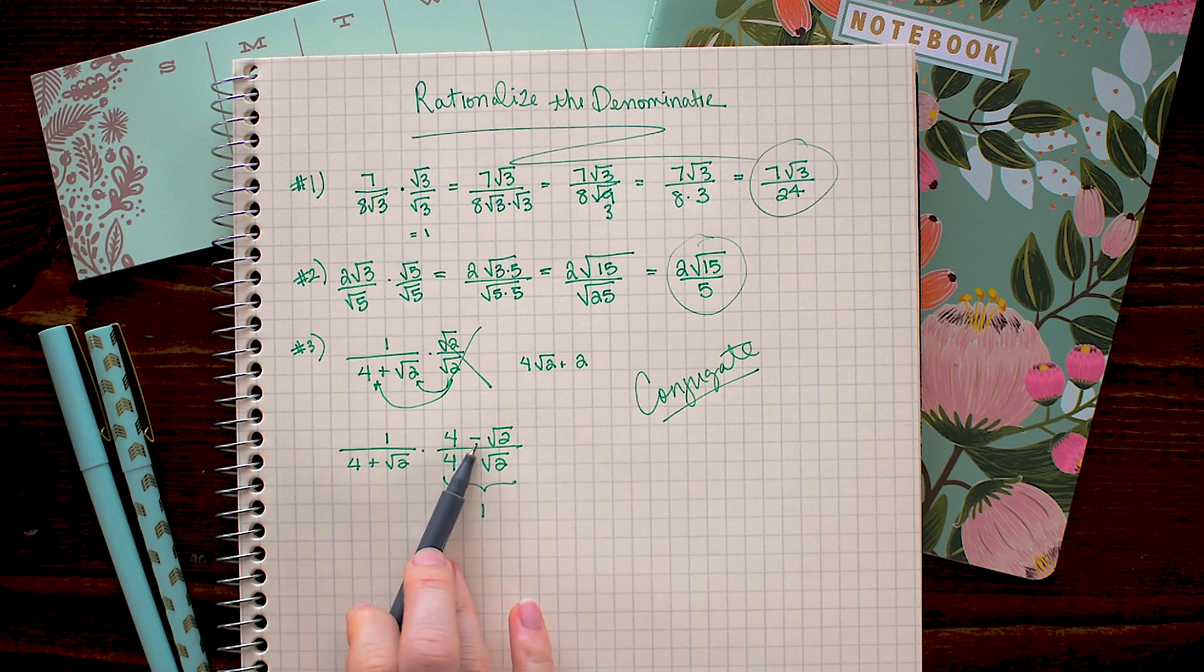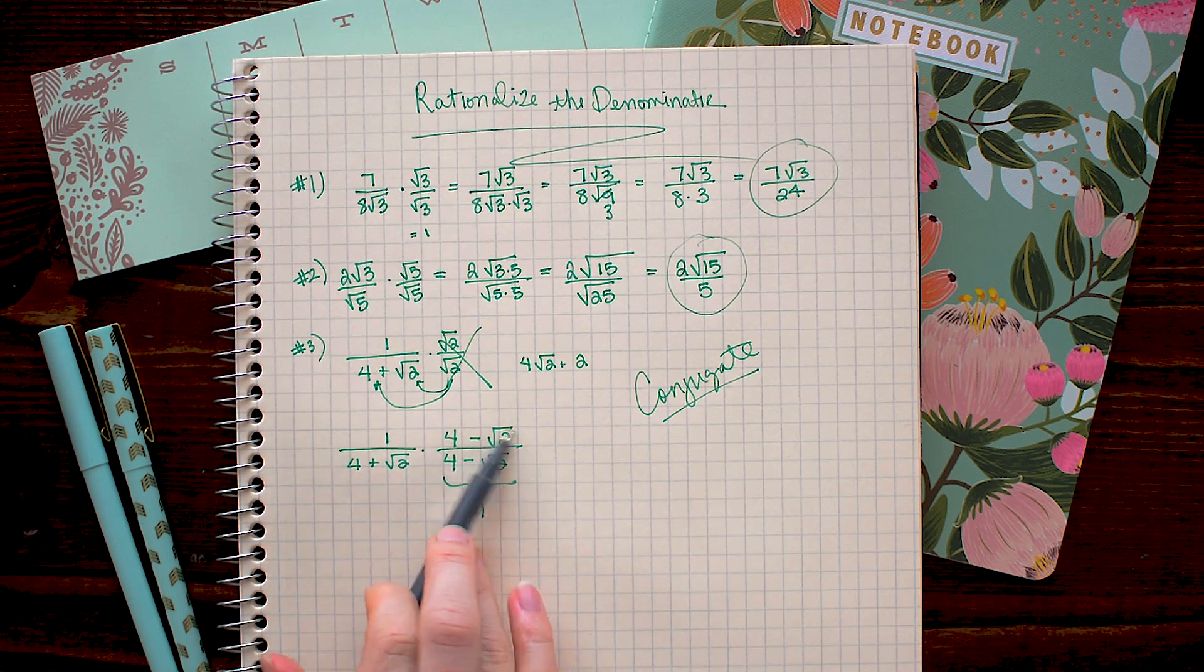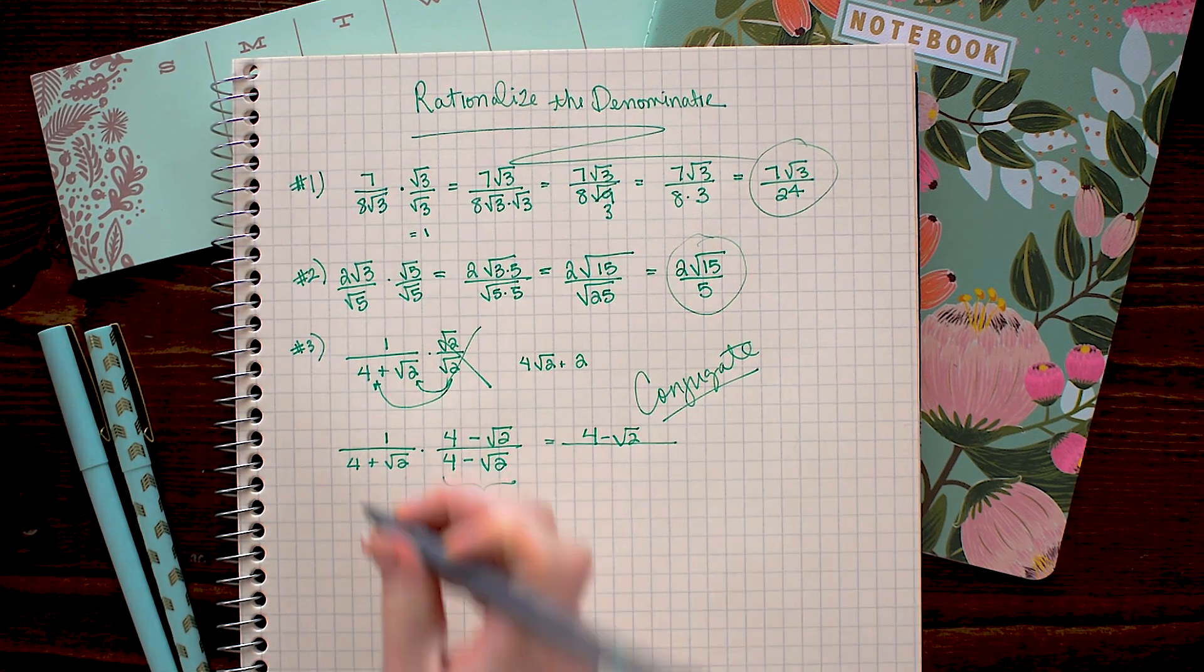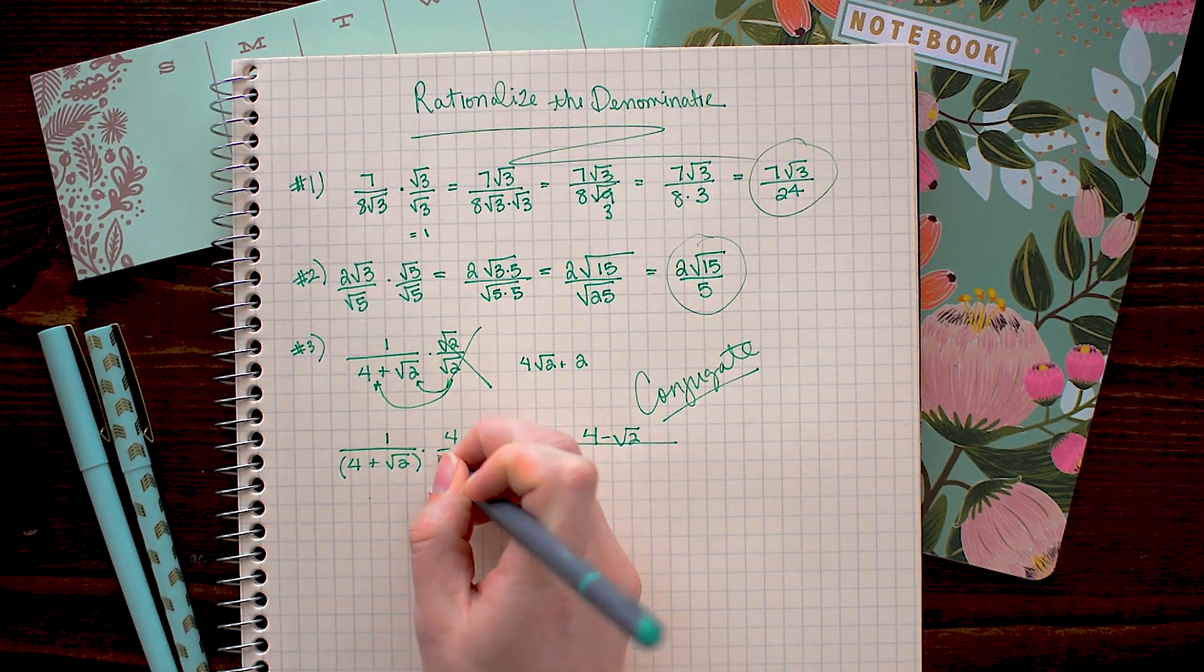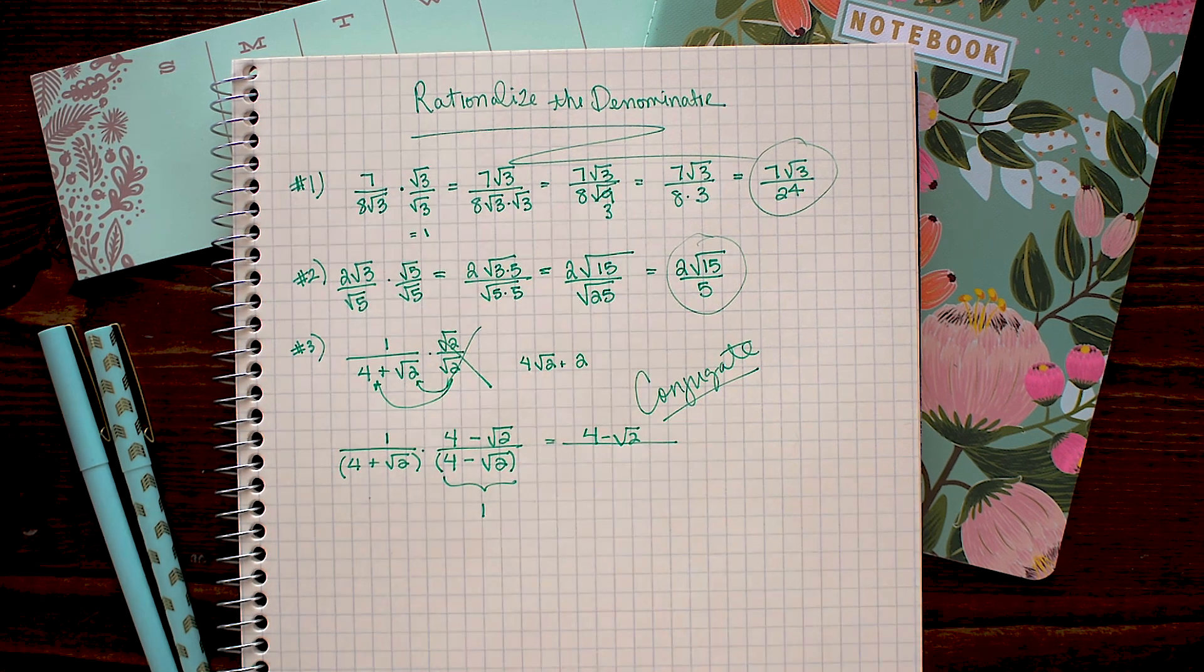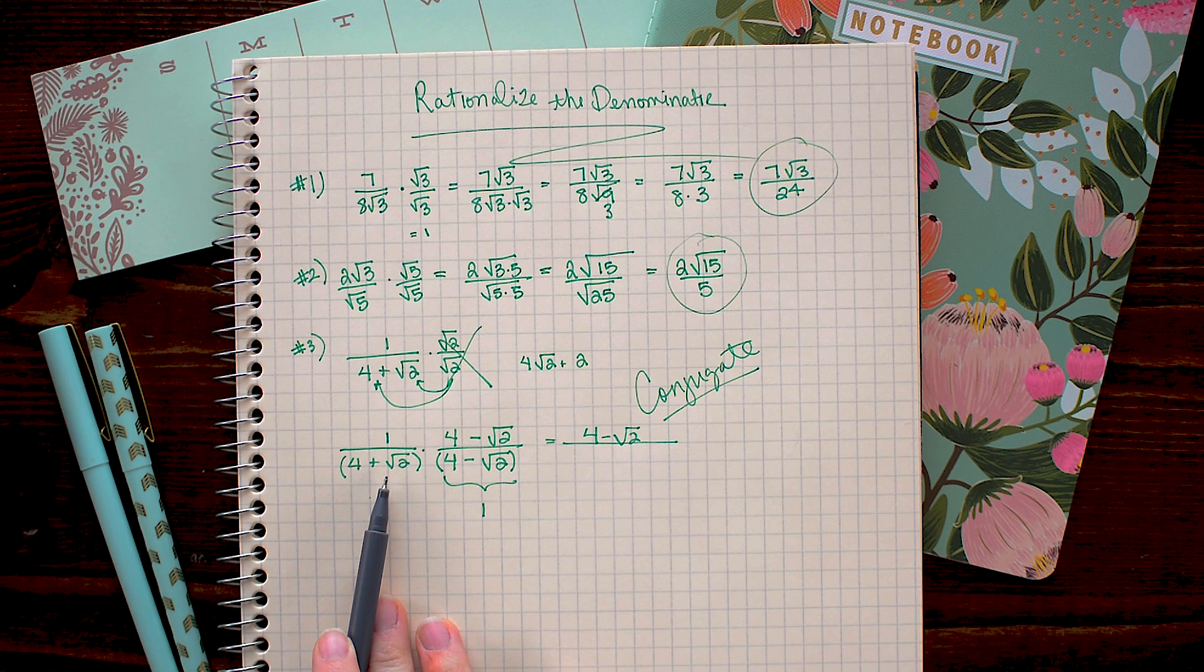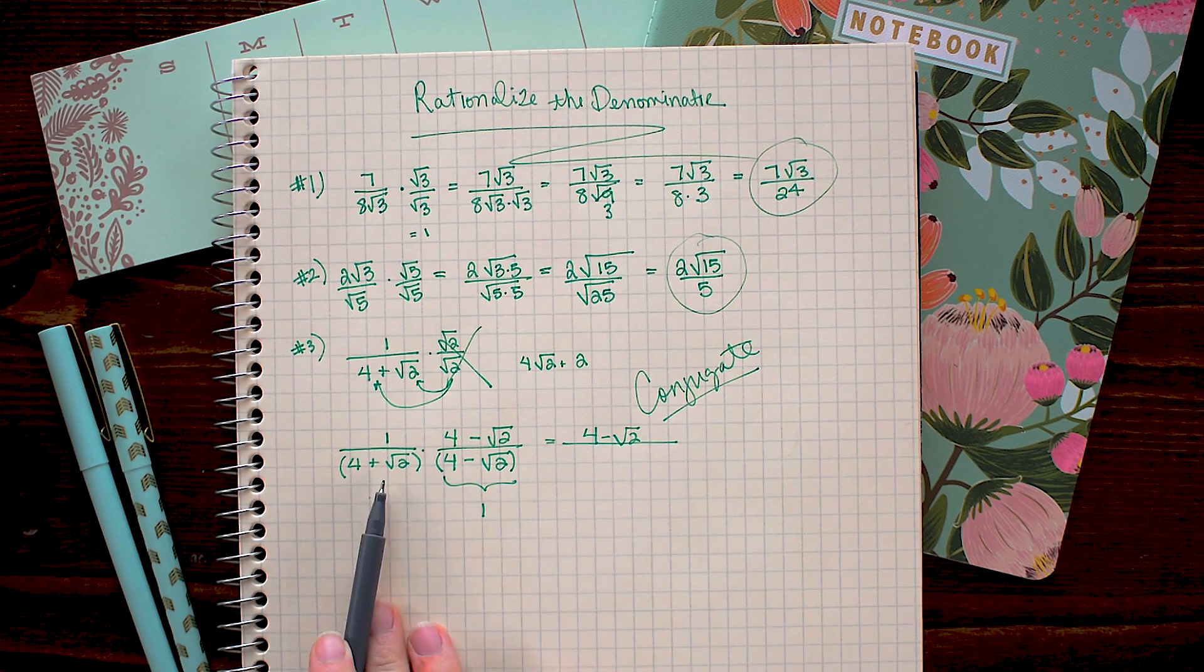So on the top, I'm just going to multiply the 1 through, and I get 4 minus square root 2. On the bottom, I want to make sure to add parentheses around this, indicating that I need to FOIL these two binomials together in order to multiply these expressions out.